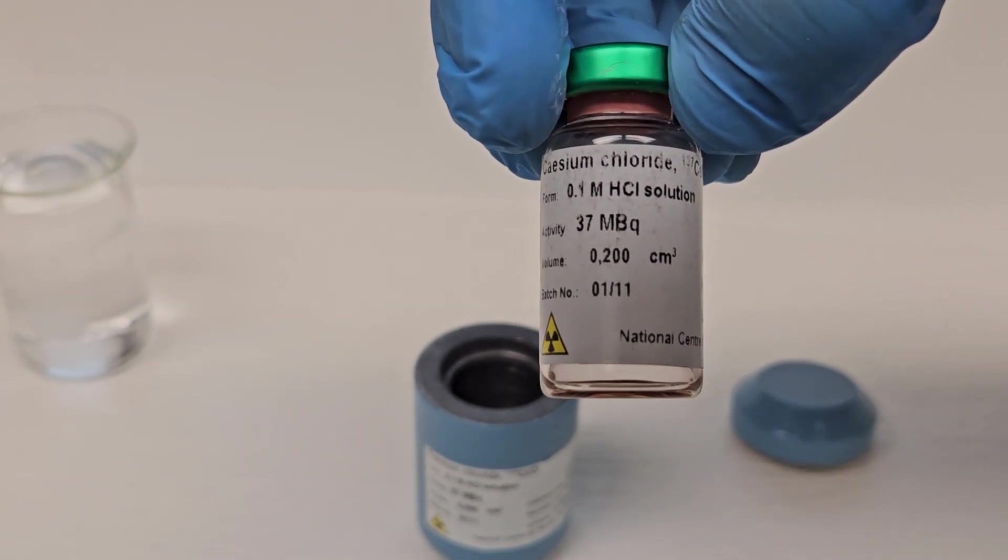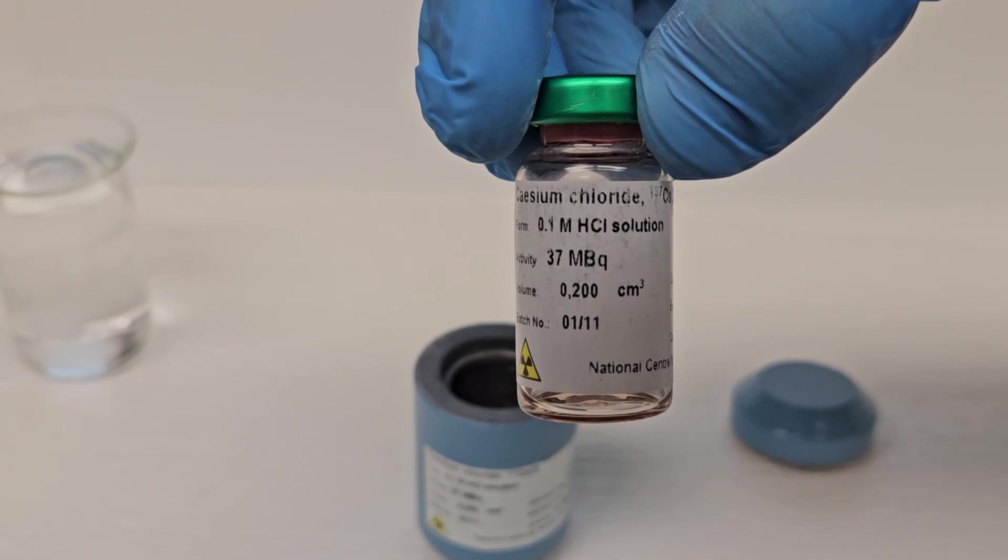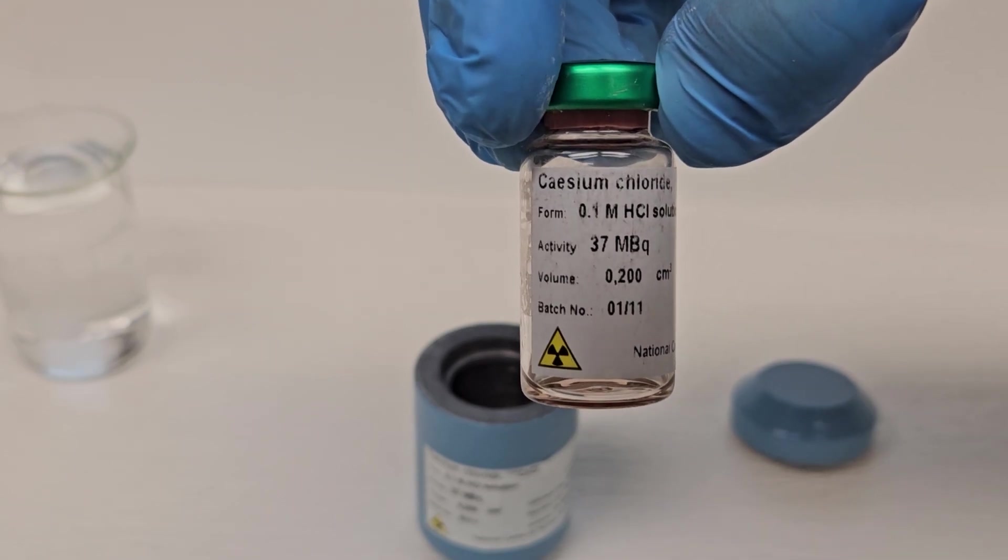So there is a trick to reduce the cation exchange capacity of the glass for this radionuclide. These radionuclides are dissolved in acid. In an acidic medium, the silanyl group of the glass dissociates much, much less, and thus the ion exchange capacity decreases rapidly. So much for the reaction vessel.